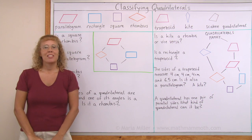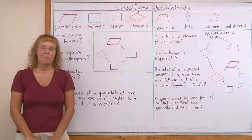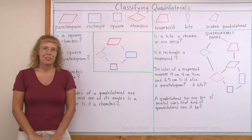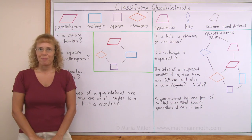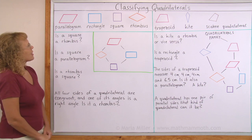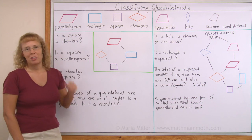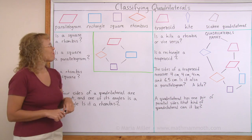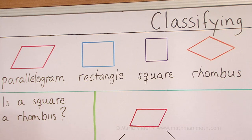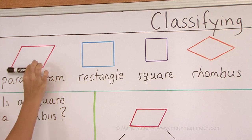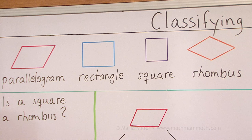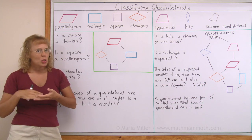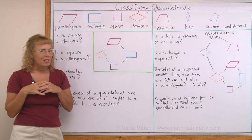Hello, my name is Maria from MathMammoth.com. In this lesson we're going to study quadrilaterals and we're going to classify them. Let's start with these four that you already know about. A parallelogram is a quadrilateral, in other words a four-sided shape, where opposite sides are parallel. In other words it has two pairs of parallel sides.